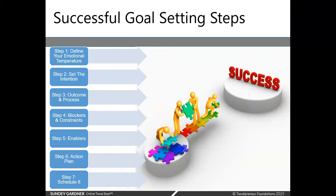Here's an overview of the steps we're going to go through today. We're going to define what your emotional temperature is for particular goal sets. We're going to set the intention for the goals that you set. We're going to look at outcomes and processes, what blockers and constraints you may have that prevent you from successfully completing those, so that we can remove them. We're going to identify what you need to help facilitate the implementation or achievement of your goal. Then we're going to talk about how to create action plans, and then we're going to get those goals on your schedule so that there's no reason you don't finish them.